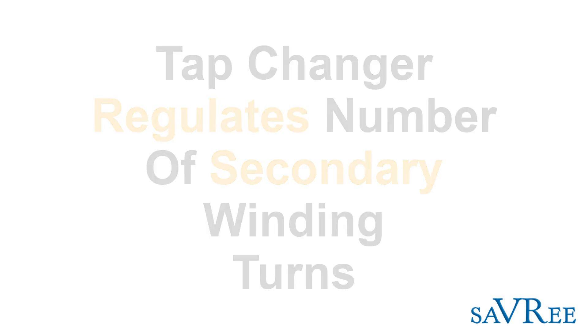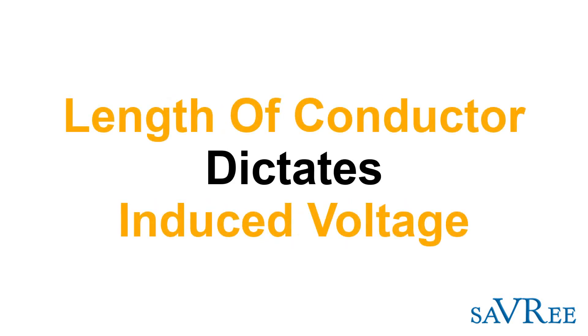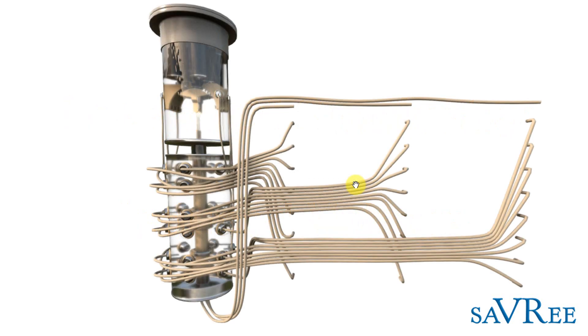Now, for those of you who are aware, turns ratio on a transformer is also associated with voltage ratio. And what I mean here is the amount of conductor that is within a magnetic field or a change in magnetic field will dictate the amount of voltage that is induced within that conductor.